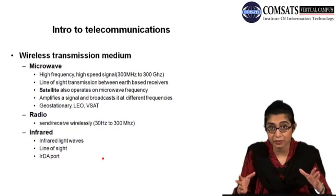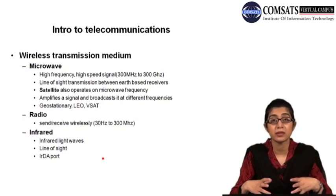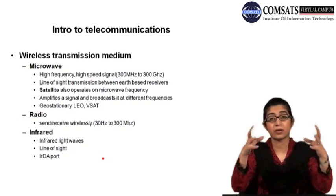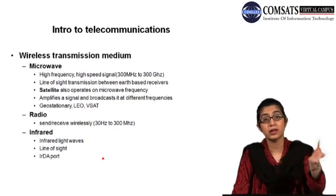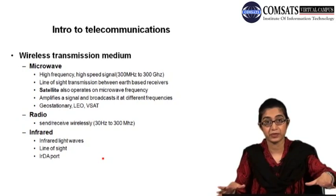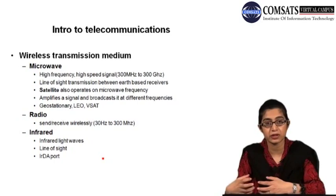Then there's satellite communication, which uses satellites with the help of microwave stations. The satellite orbiting the earth takes a signal from one microwave station, amplifies it, and broadcasts it to the rest of the stations. So the station that receives the information takes it in. Satellite uses microwave frequencies. There are different kinds of satellites orbiting the earth — a geostationary satellite orbits a few miles above the earth on top of the equator, and there are basically three geostationary satellites working.